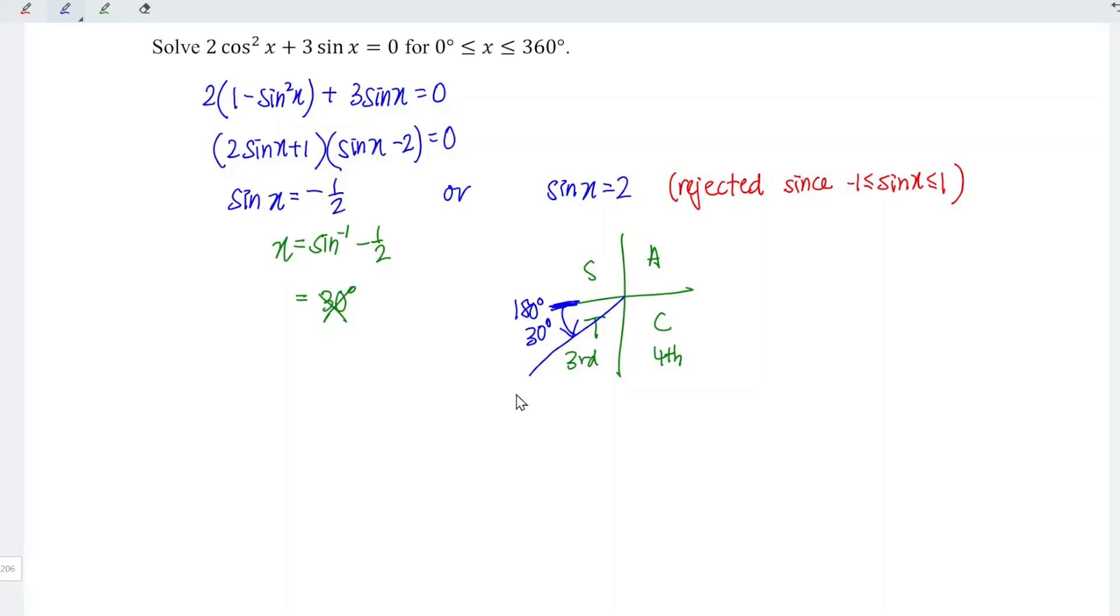So 180 degrees plus 30 is equal to 210 degrees. So we write it here, 210 degrees. We have settled the third quadrant.